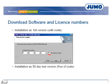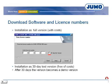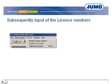Furthermore, most software products can be installed as a 30-day version. This is a full version limited to 30 days. After 30 days the version becomes a demo version. A demo version can subsequently be changed into a full version by entering the license number. The license number is available with costs.